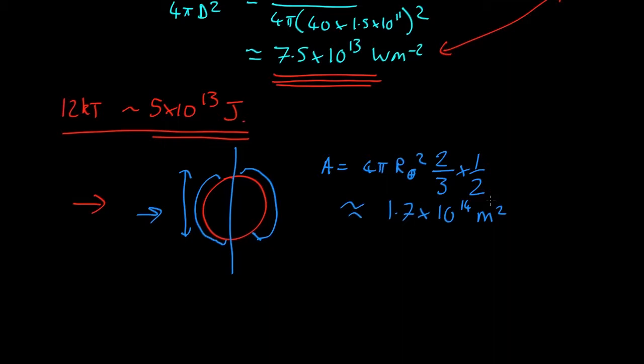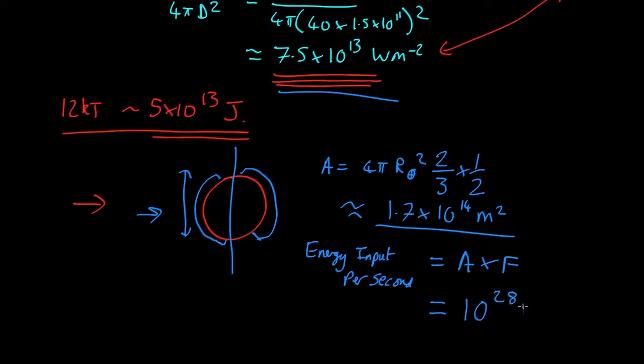So how much energy is arriving? The energy input per second is equal to the area times the flux. We've got the area. We've got the flux. And that comes out as about 10 to the 28 watts.